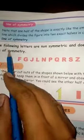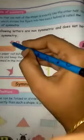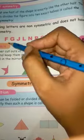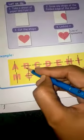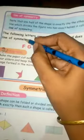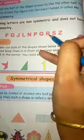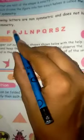Line of symmetry: the following letters are non-symmetric and do not have a line of symmetry. F is not symmetric. G, J, L, N, P, Q, R, S — these letters are also not symmetric.